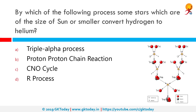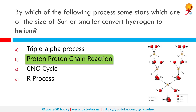By which of the following process do some stars of the size of the sun or smaller convert hydrogen to helium? The correct answer is the proton-proton chain reaction. The proton-proton chain reaction is one of two known sets of nuclear fusion reactions by which stars convert hydrogen to helium. It is a branched chain of reactions starting with two protons coming together and yielding deuterium.